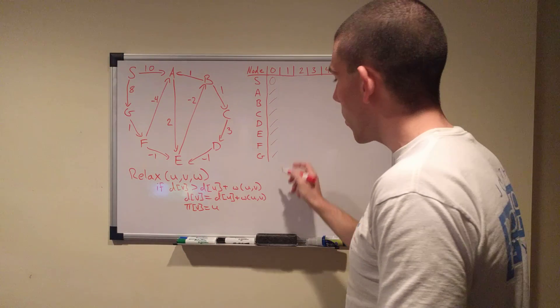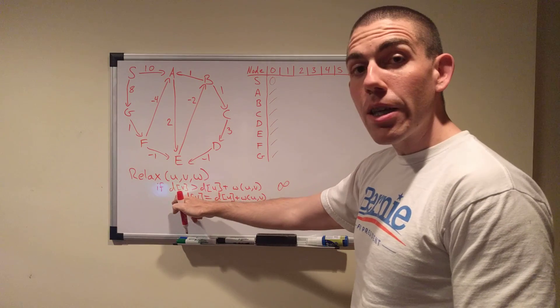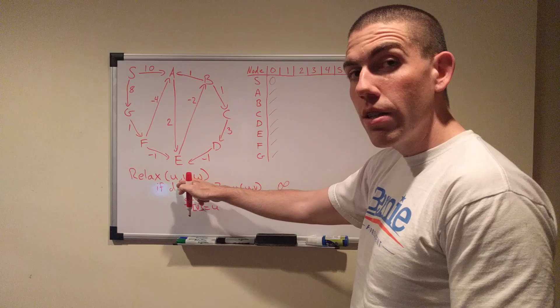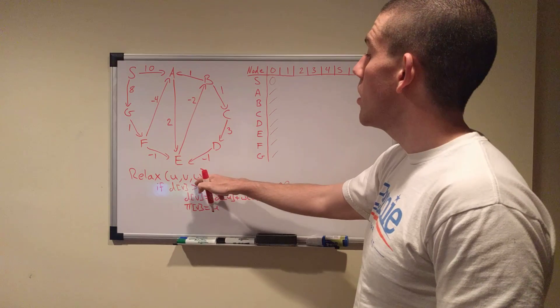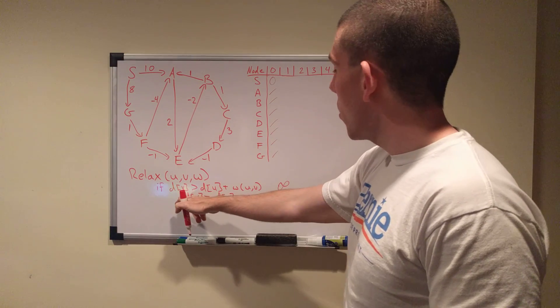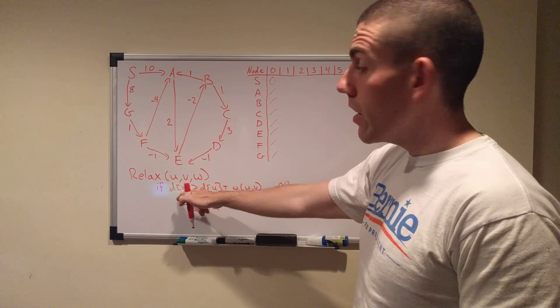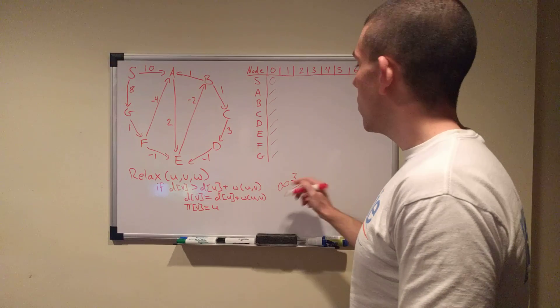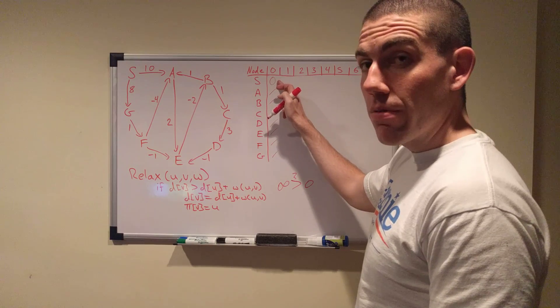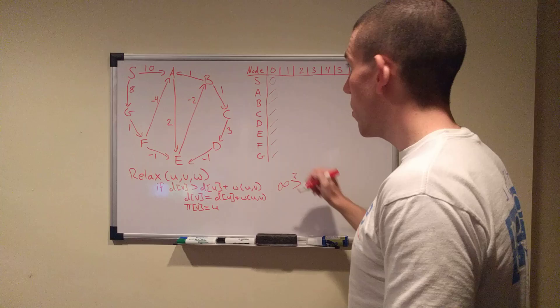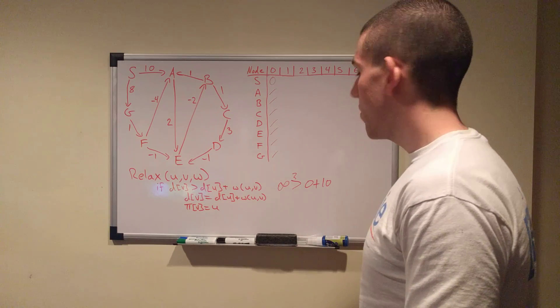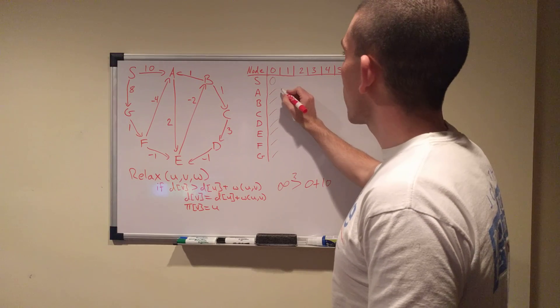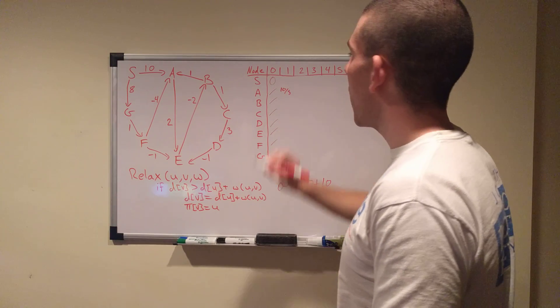Well, the current cost of A is infinity. That's DV, right? The distance is infinity. So this is UV, where U is S and V is A. W is the weight of the edge in between them. So DV, DA is infinity. We're asking, is that greater than DU, which is zero, plus the weight of the edge, which is 10? And the answer is yes, of course it is. So we're going to update A with a cost of 10 coming from S.